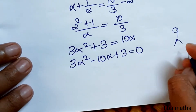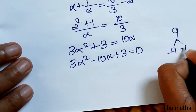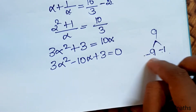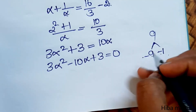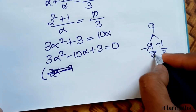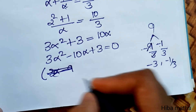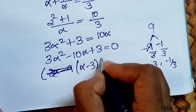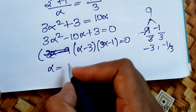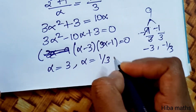Solving 3α² - 10α + 3 = 0: factoring gives (3α - 1)(α - 3) = 0, so α = 3 or α = 1/3. Therefore the roots α = 3 and 1/α = 1/3 are confirmed.